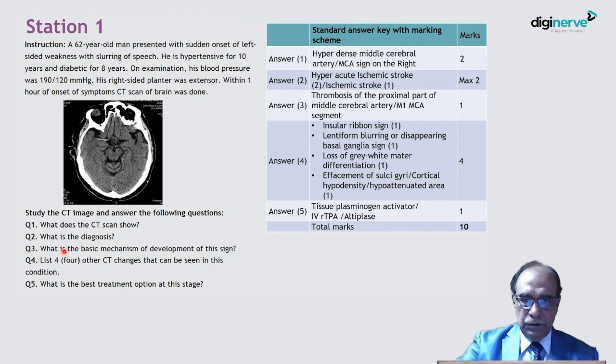What is the diagnosis? This is the earliest sign of ischemic stroke. So this is diagnosis hyperacute ischemic stroke. If you say ischemic stroke you will get the half mark. If you write hyperacute then you will get full marks. If you write only ischemic stroke you will get 1, if you write hyperacute ischemic stroke you will get full marks, that is maximum marks.